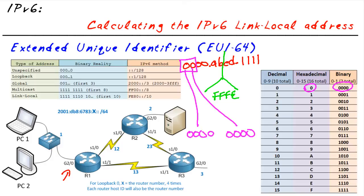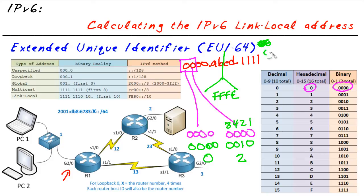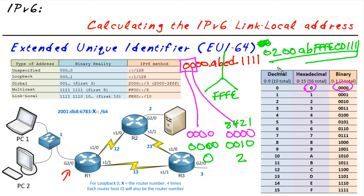We're going to flip that bit. If we flip it, it's going to look like this — 0010. If we convert that back to hex, this is going to be a zero and this is going to be a two, because that's the two-position. So the final result would be 02 — that's after the bit flip on the seventh bit — followed by 00, AB, then FFFE inserted, then CD, 1111. And that, my friends, is our EUI-64 address for the host ID that it's automatically going to use.